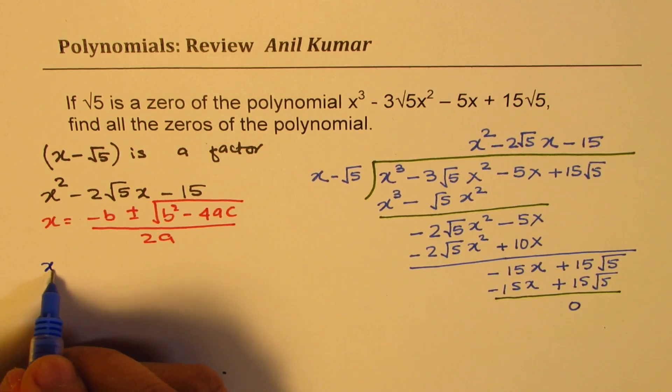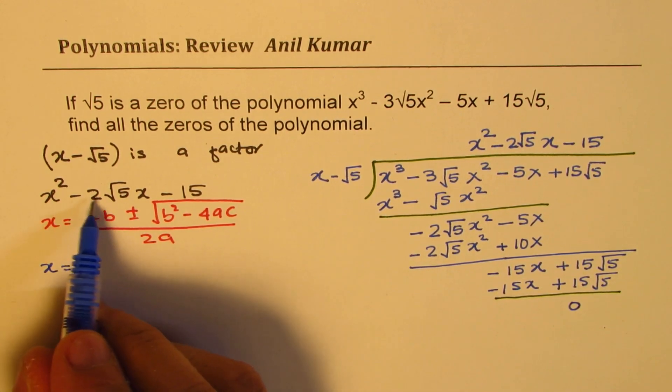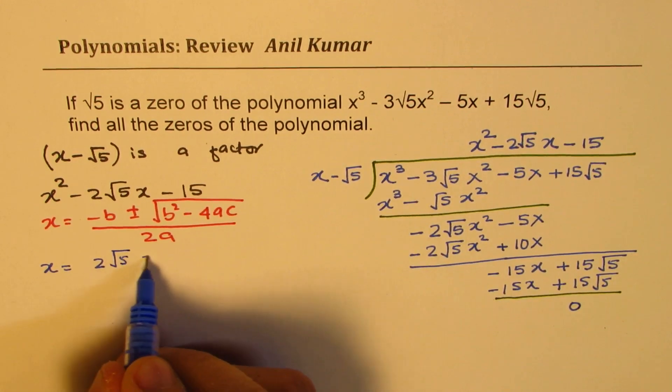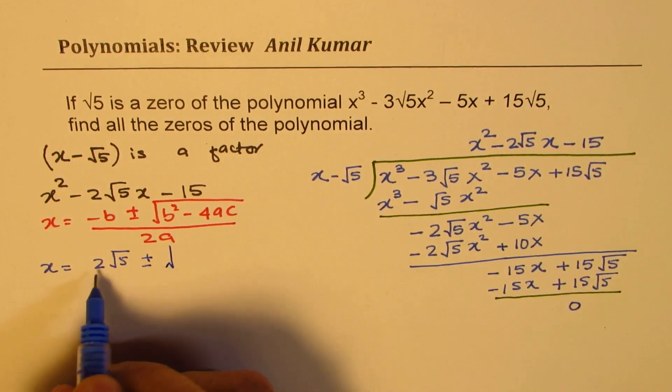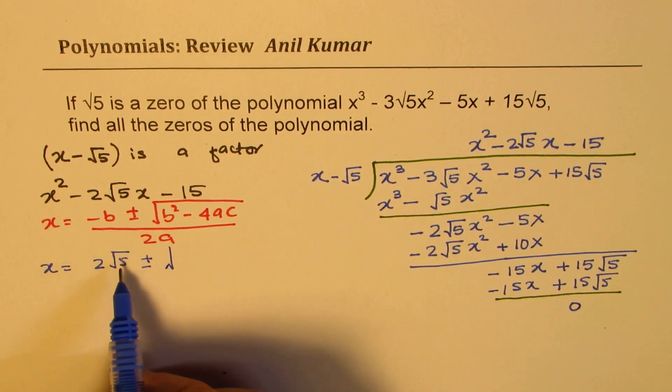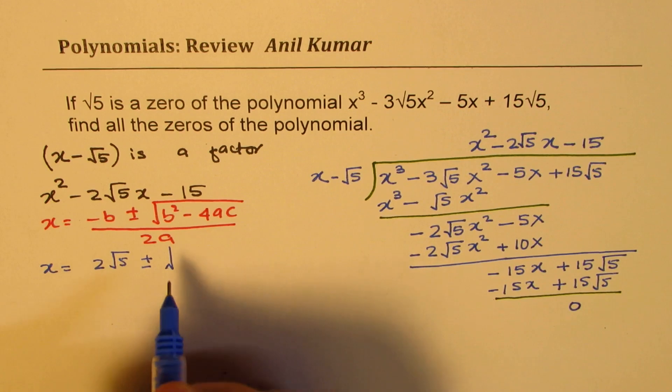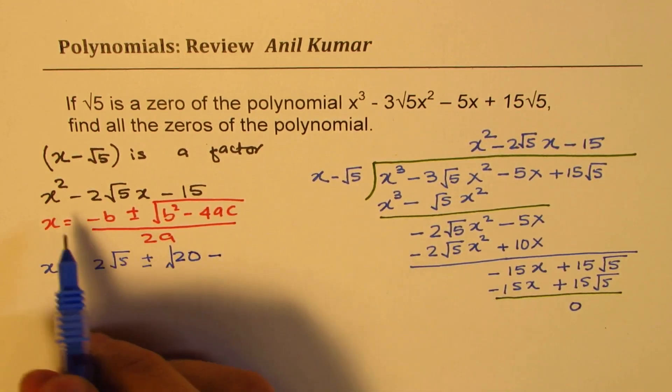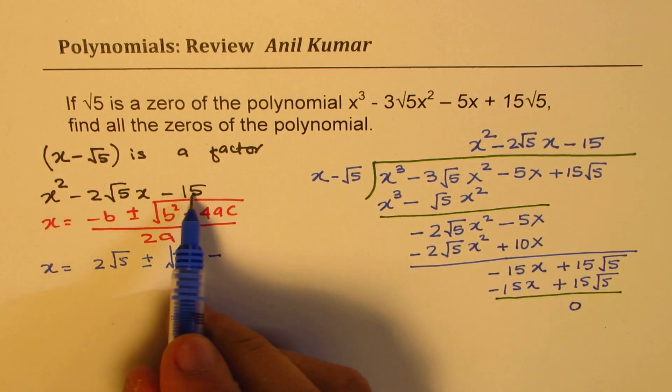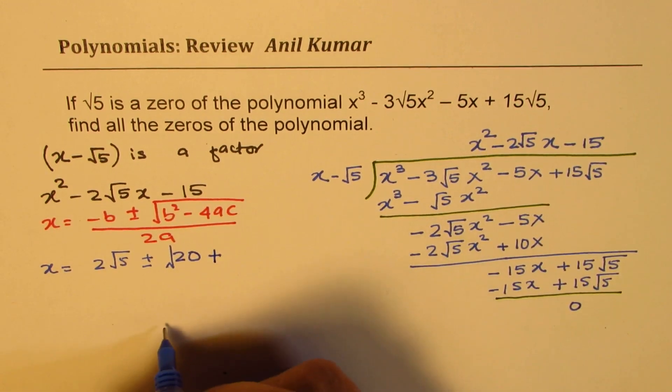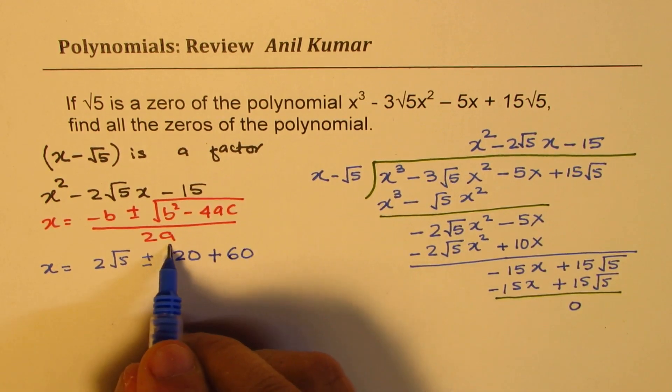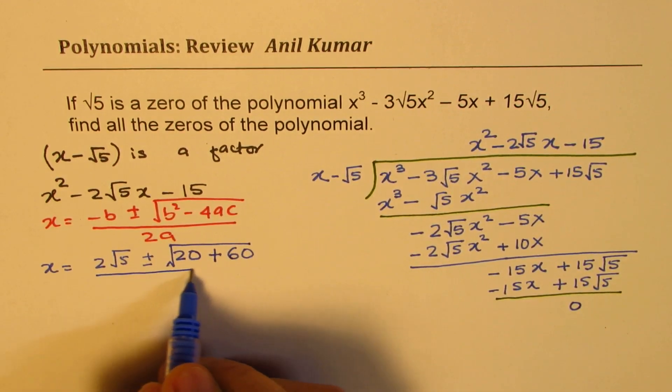So we get x equals minus of minus 2 square root 5 gives us 2 square root 5 positive plus minus square root of this term. We'll make 5 squared. Square root 5 will be 5, and this will be 4. So 4 times 5 is 20. Minus 4 times a, a is 1, c is minus 15. Minus makes it positive. 4 times 15 is 60.